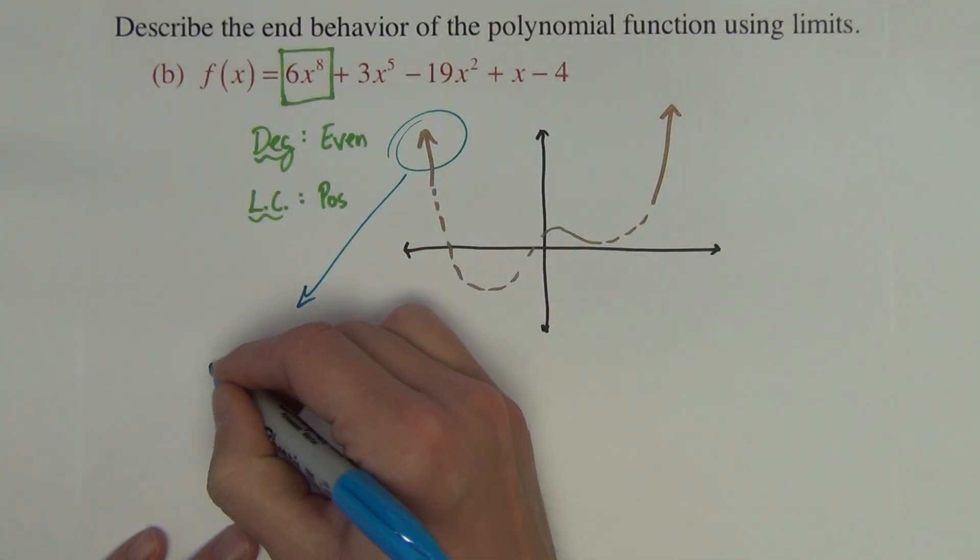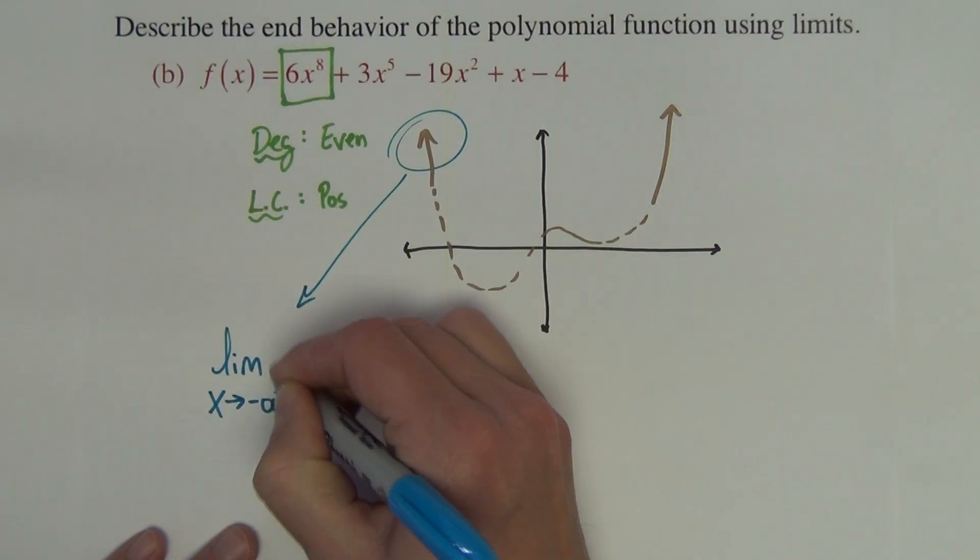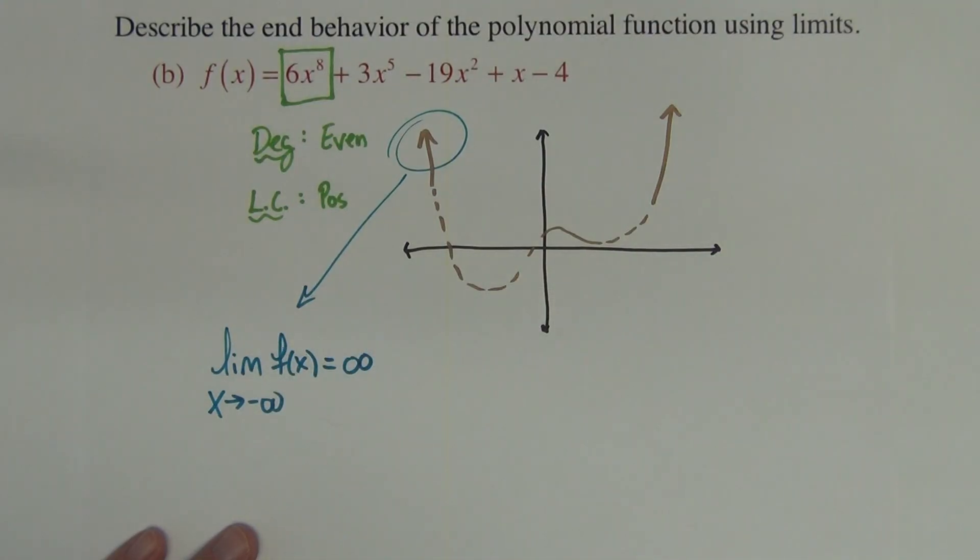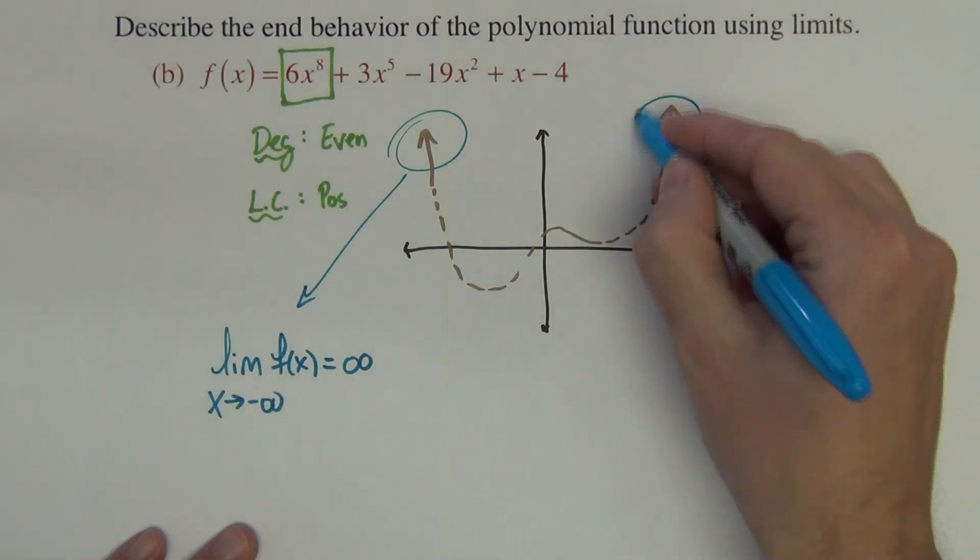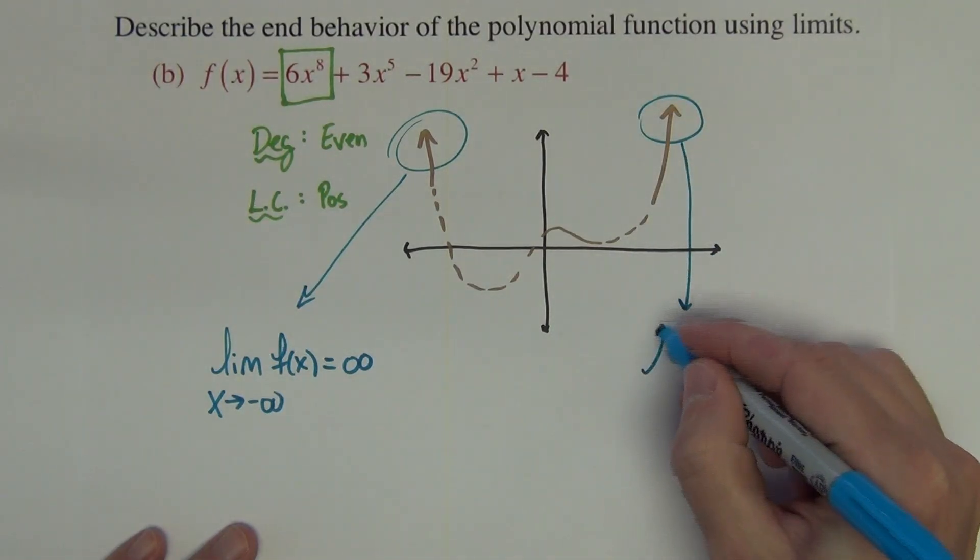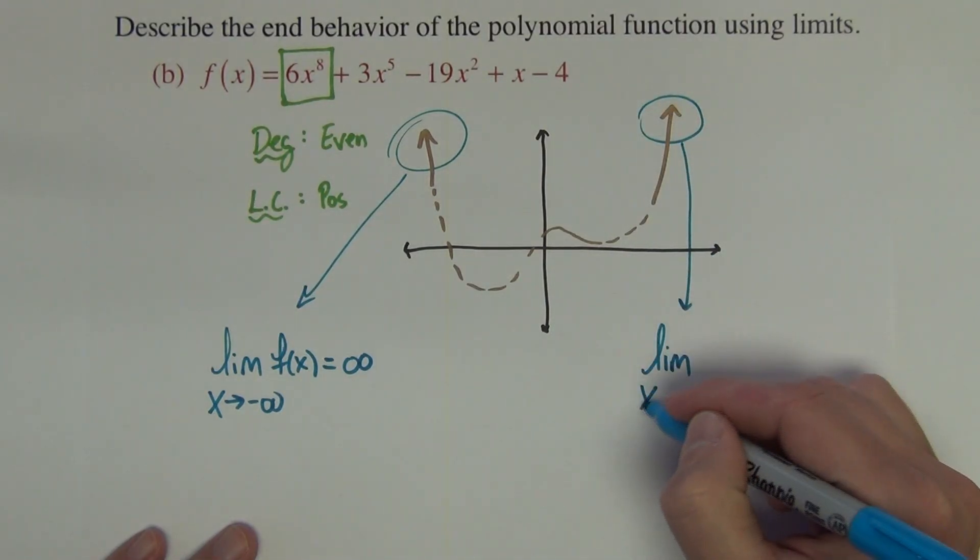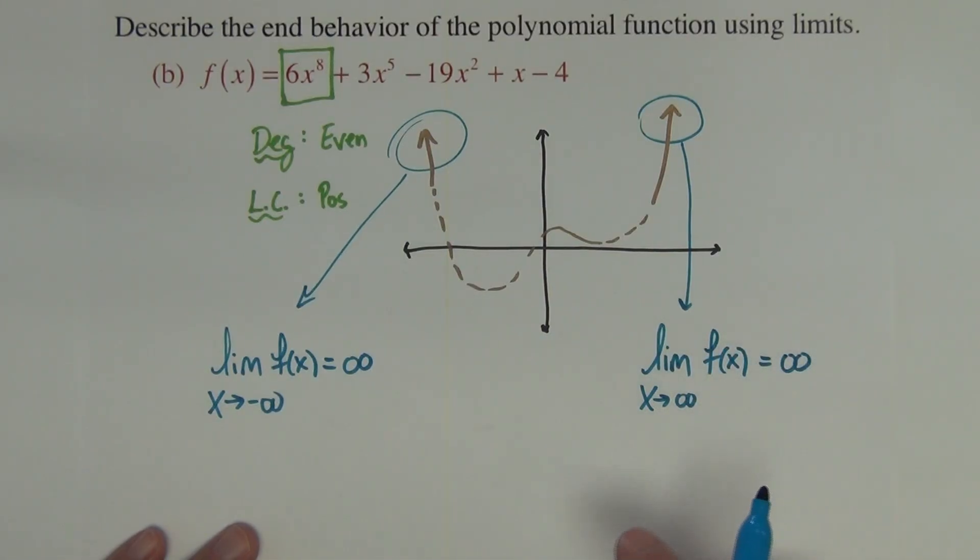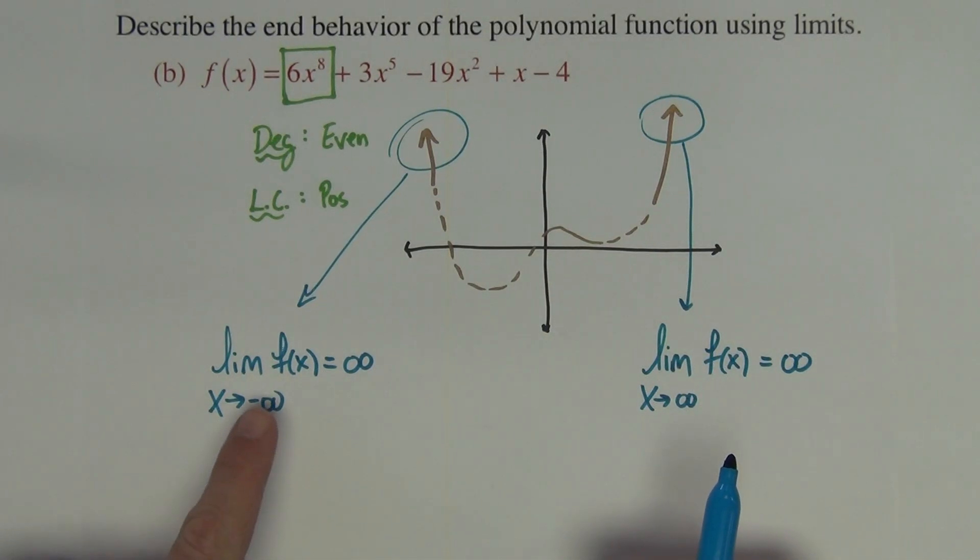Alright, this end behavior is the limit as x approaches negative infinity of f(x) equals infinity. And this end behavior is the limit as x approaches positive infinity of f(x) equals positive infinity. So whether you're going left or right, both ends are going towards positive infinity.